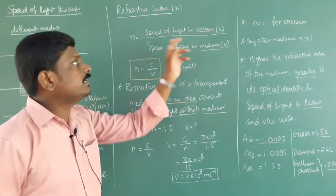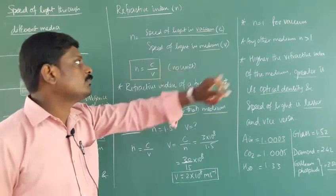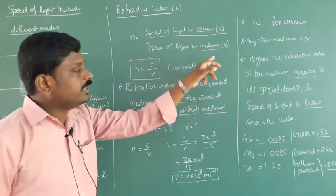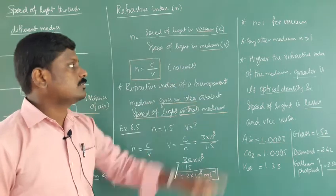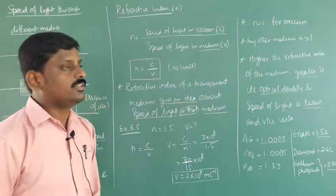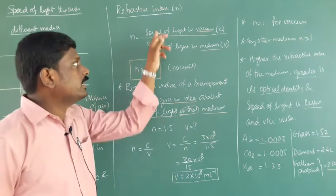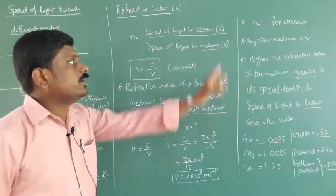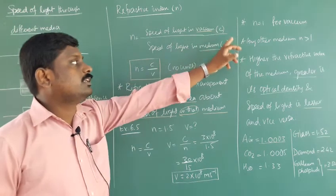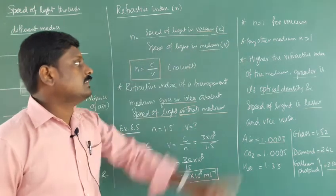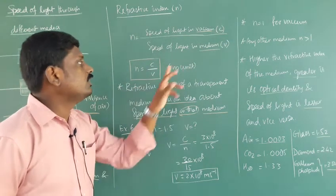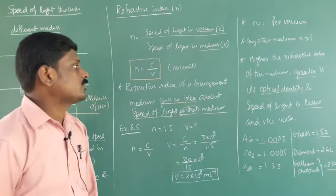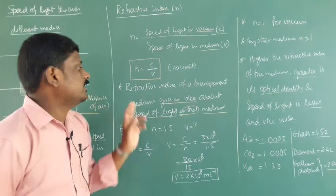The speed of light in vacuum is C, and the speed of light in that medium is V. So the refractive index n is equal to C divided by V. Since both are speeds in meters per second, the units cancel out, and therefore refractive index has no unit.